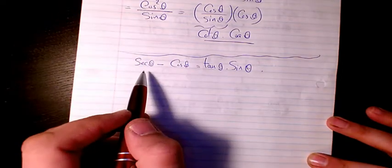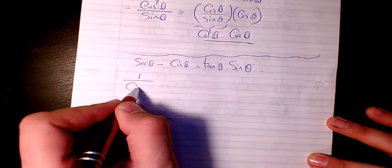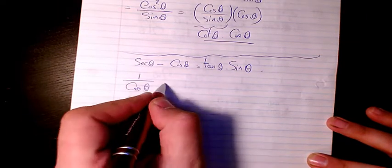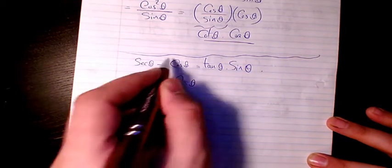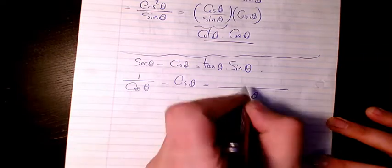Right away, I start from the left hand side. So secant, I convert it to cosine. As we know, secant is the inverse of cosine, so we have 1 over cosine theta minus cosine theta. Now I need to have a common denominator. We have 1 here, here is going to be cosine theta.